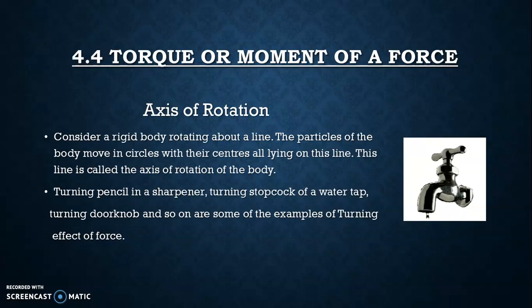Next is the axis of rotation. Consider a rigid body rotating about a line. The particles of the body move in circles with their centers all lying on this line — this is called the axis of rotation. When a body rotates around a fixed axis, that axis is known as the axis of rotation. Examples include: turning a pencil in a sharpener, turning the stopcock of a water tap, and turning a doorknob.